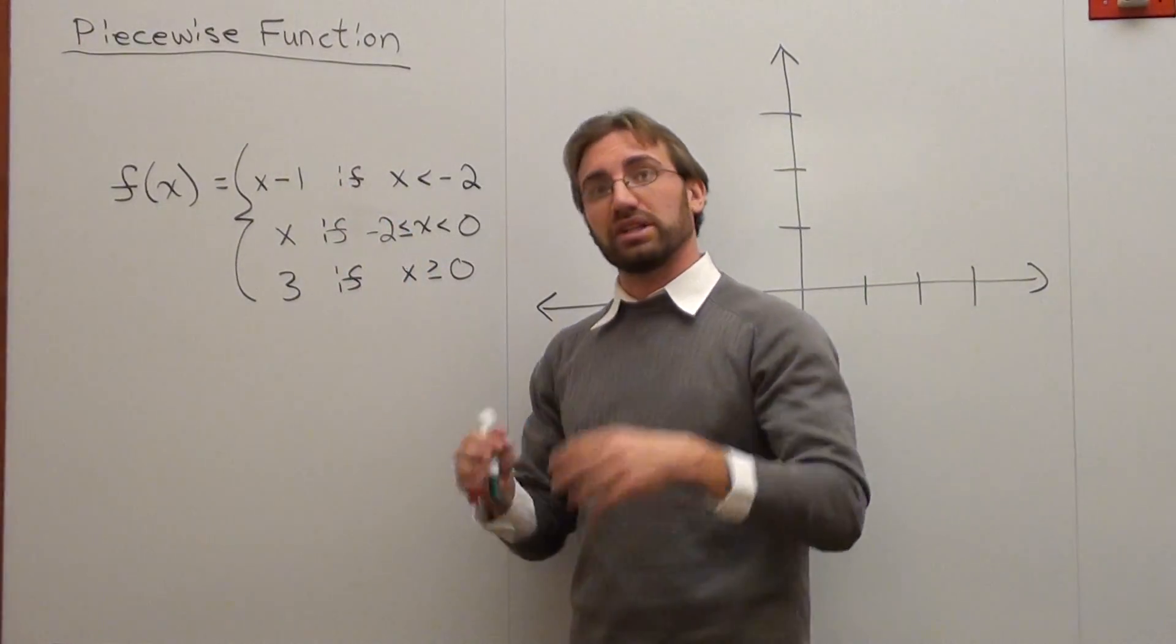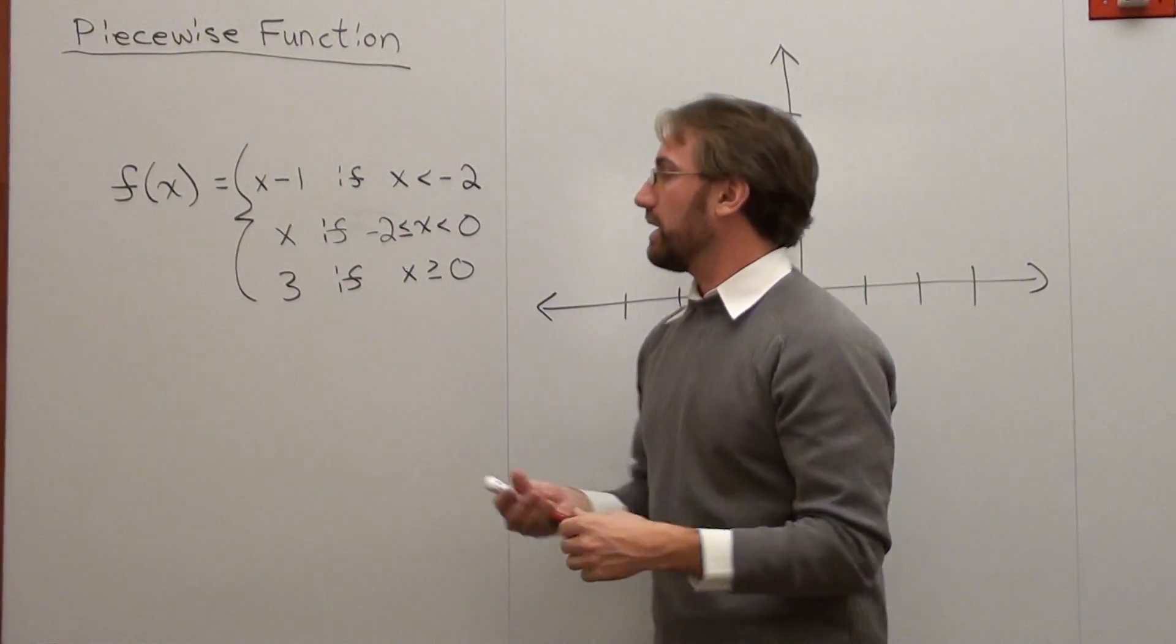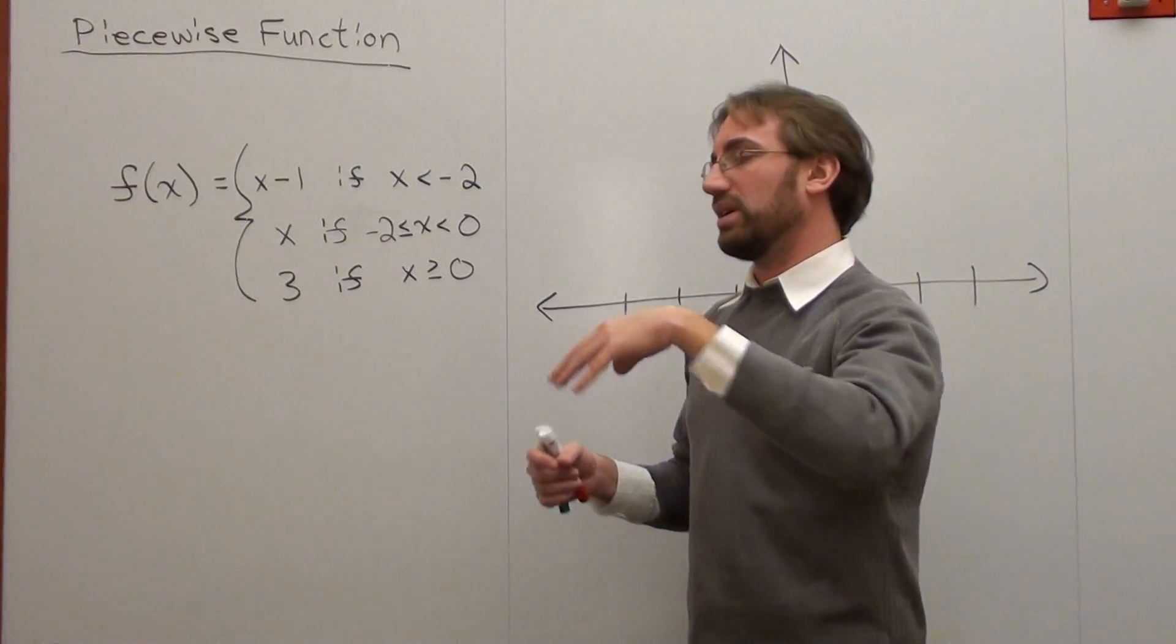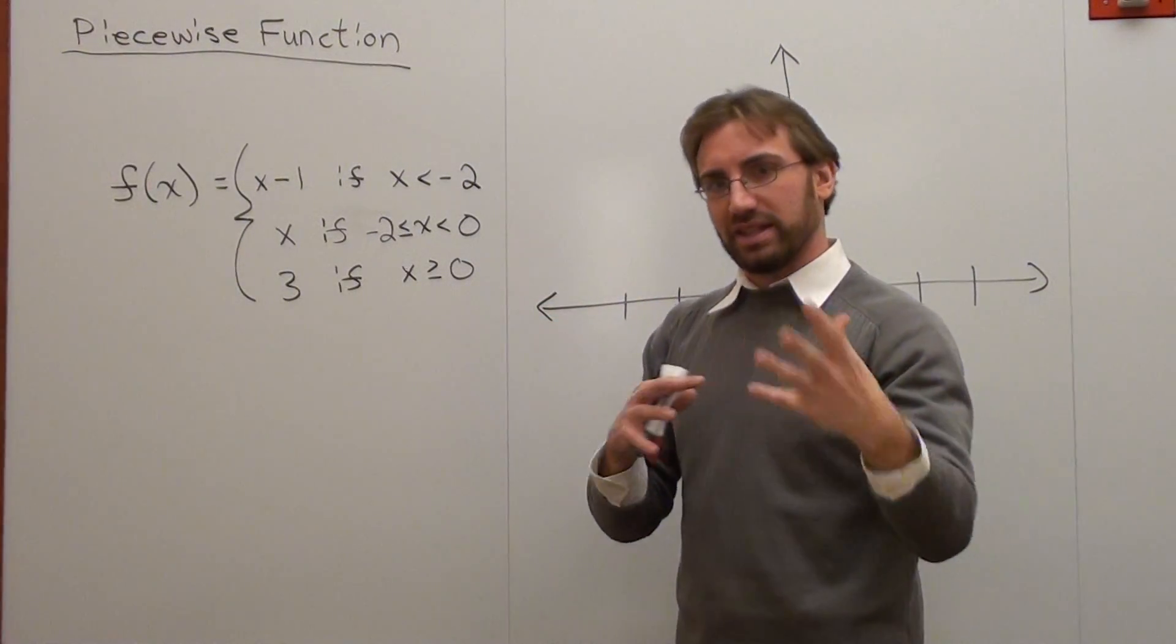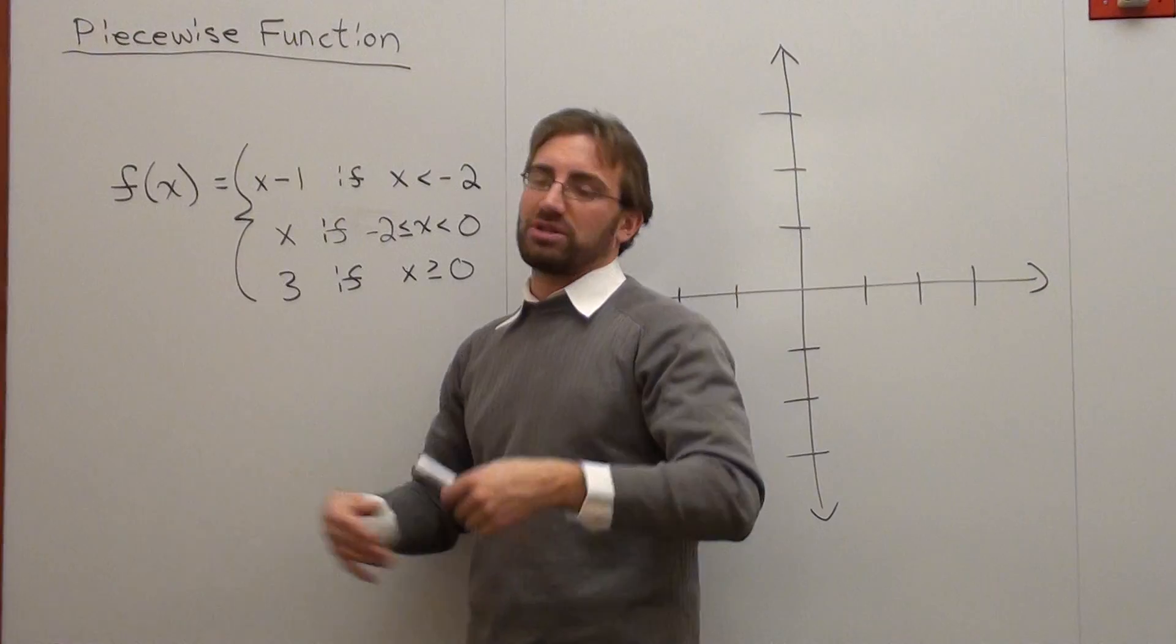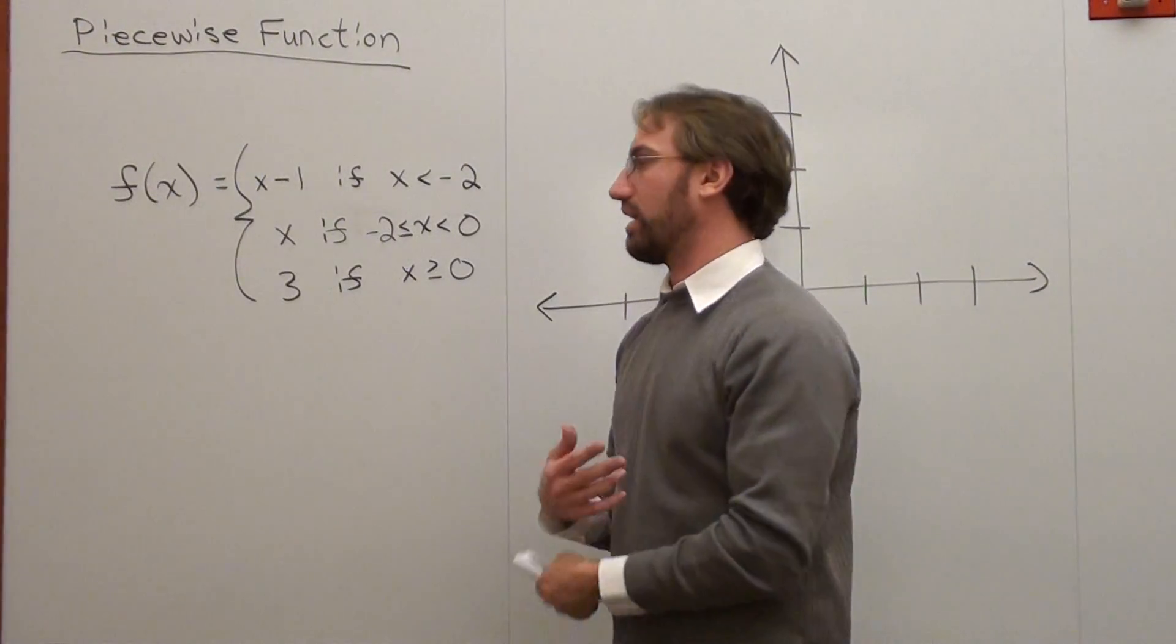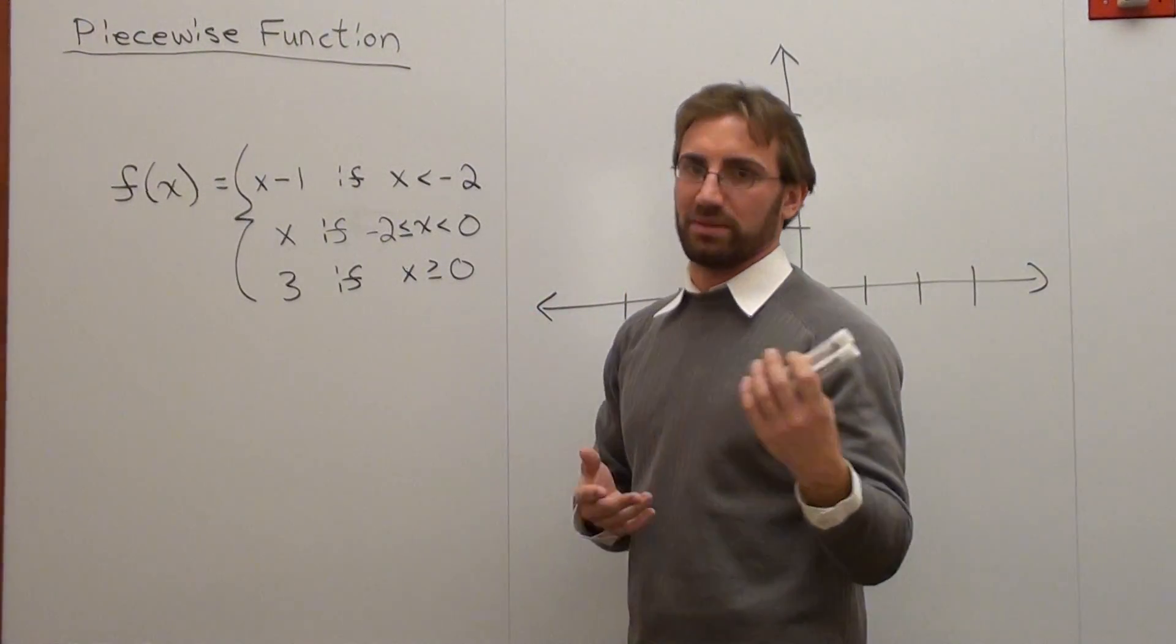And basically what I did was I split it into three different functions, three different pieces. It's a little intimidating, like I said, but let me just try to make it as easy as I can. Hopefully it won't be so bad. F of x just means y. That's it. It always just means y if you want to simplify it.